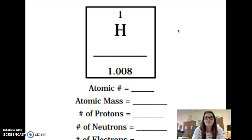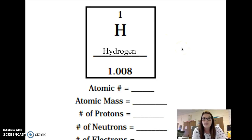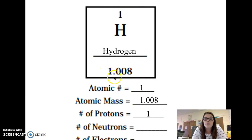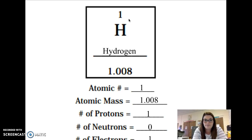Next example: hydrogen, H — the first one on the Periodic Table. The atomic number is the number on top: 1. The atomic mass is the number on bottom: 1.008. The number of protons is the same as the atomic number: 1 proton. For neutrons: 1.008 rounded is 1; 1 minus 1 equals 0 neutrons. The number of electrons is the same as the atomic number: 1 electron.